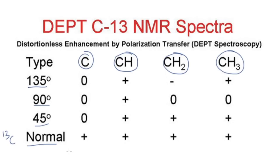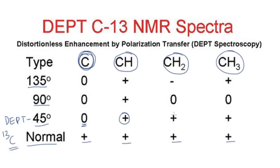In a proton-decoupled carbon-13 NMR spectra, you get peaks for all kinds of carbons, all in the positive direction. For DEPT 45, the quaternary carbon will not show any peak — it will be suppressed. You will get a positive peak for CH, for CH2, and for CH3. So all hydrogen-containing carbons give positive peaks in DEPT 45.